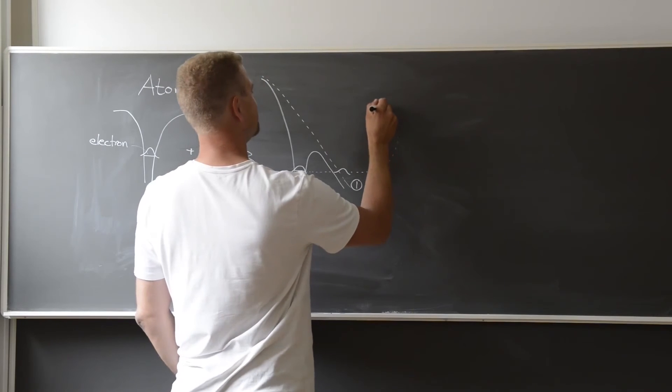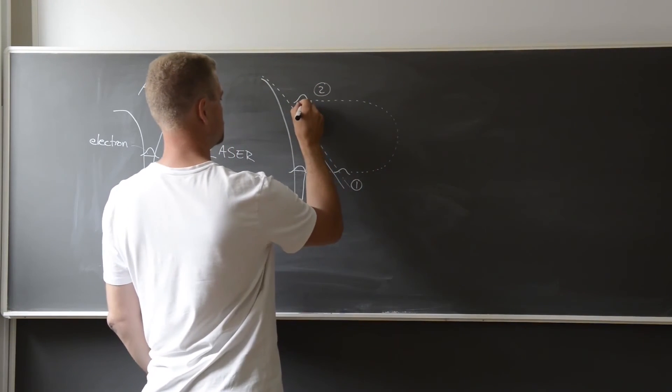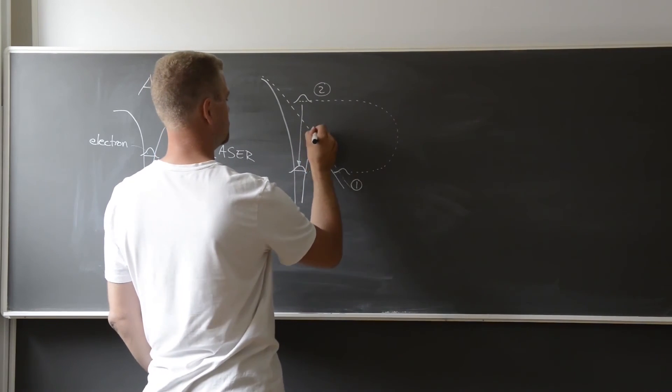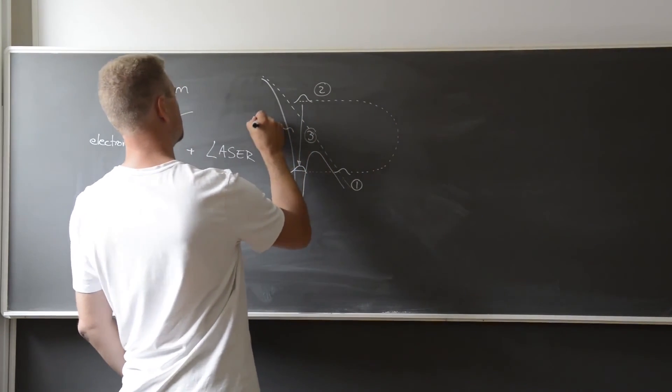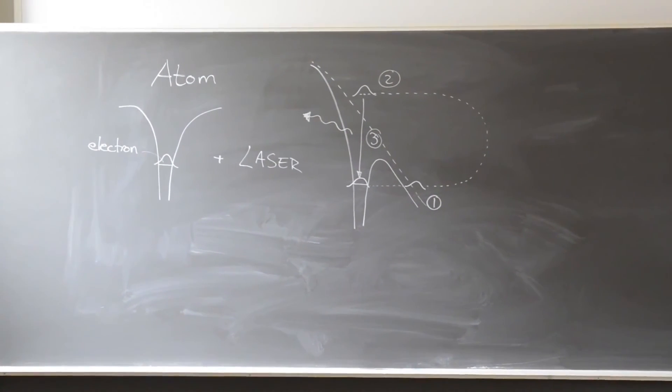The next step is that the electron is accelerated in the laser field, and finally the third step is depending on the time of ionization, the electron may actually be driven back to the vicinity of the ion, and here a number of things can happen.